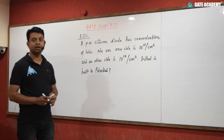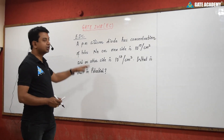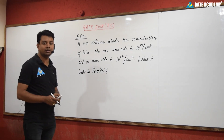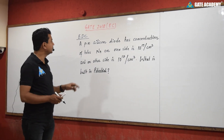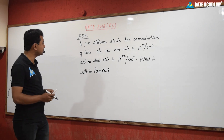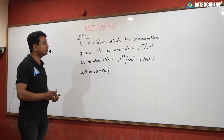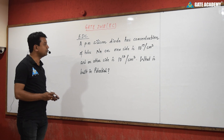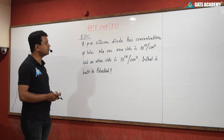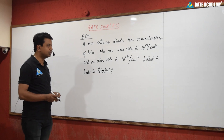Hello students, welcome to GATE Academy. This is a question asked in GATE 2018, from electronic devices and circuits. A PN silicon diode has a concentration of holes NA on one side equal to 10 to the power 15 per centimeter cube, and on the other side ND equal to 10 to the power 17 per centimeter cube. What is the built-in potential?